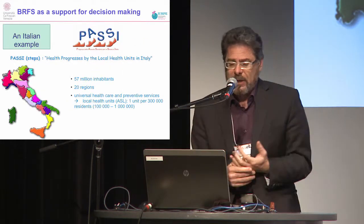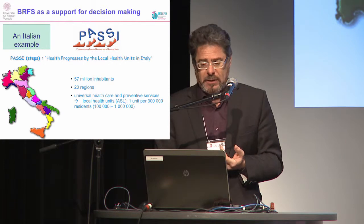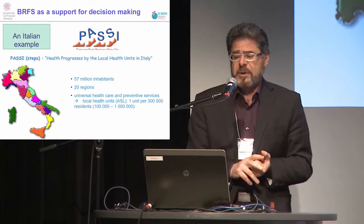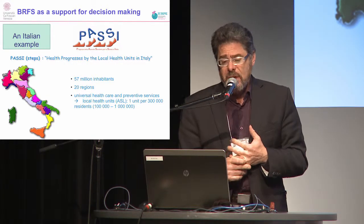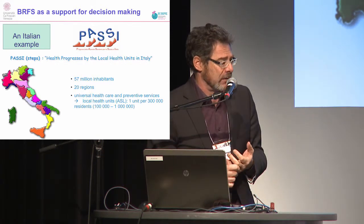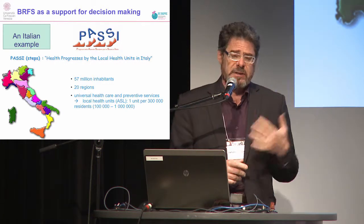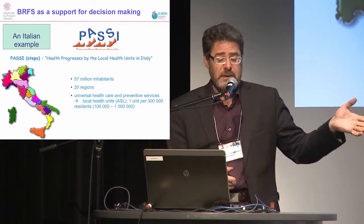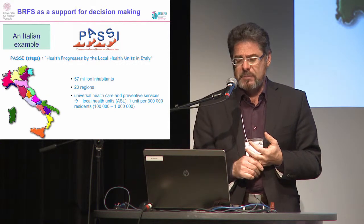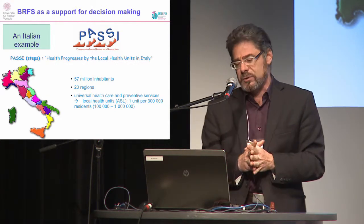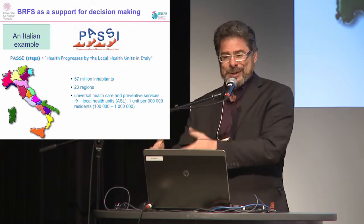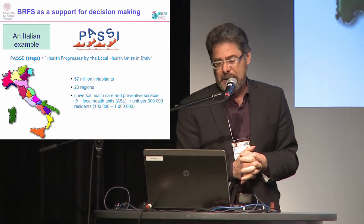To bring some examples, I move from the international experience to the Italian experience, because what has been done in Italy is quite peculiar. The first good surveillance system was perhaps developed in the US through the CDC in 1984, and has been running since then, collecting millions of interviews. The Italian system started only in 2007, but it has some peculiar characteristics I want to share — to show how surveillance can work and, eventually, how it can help in monitoring health inequalities.